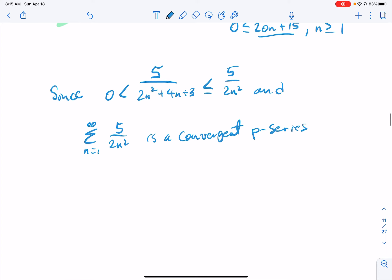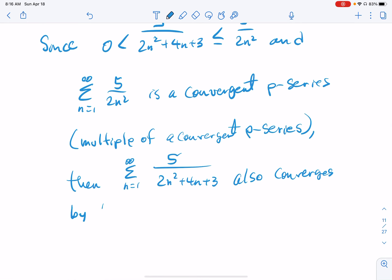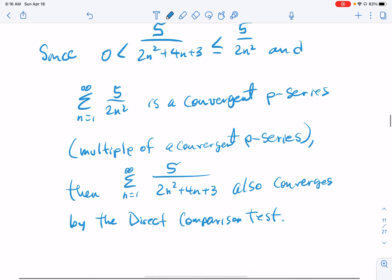It's actually a multiple of a convergent p-series. So we're smaller than a convergent. The proper conclusion is then the series n equals 1 to infinity of 5 over 2n² + 4n + 3 also converges. And if you want to, you can say by the direct comparison test, assuming you remember what it's called in the heat of the moment.